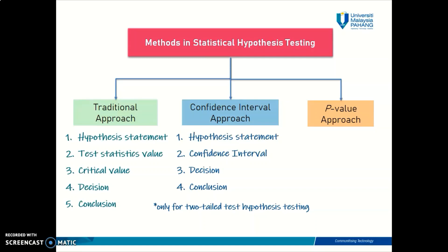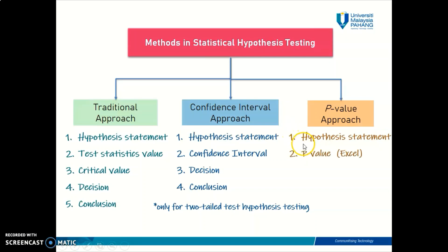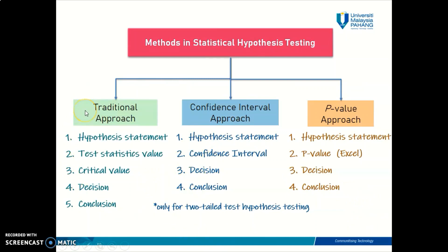There are four steps in doing the p-value approach. The first one, similar to the traditional and confidence interval approach, is to construct your hypothesis statement. The second step is to find your p-value, and there are several ways to do this which we will talk about later. Then you proceed to make your decision in step three, and finally make your conclusion in step four. This is my simple summary of the three different approaches you can use to conduct a statistical hypothesis testing.